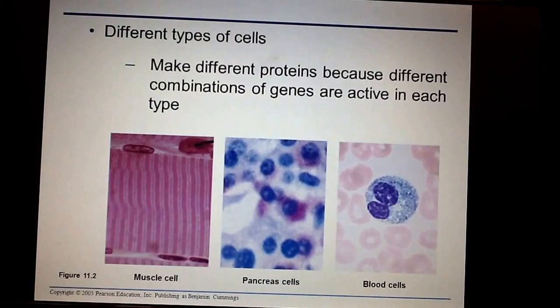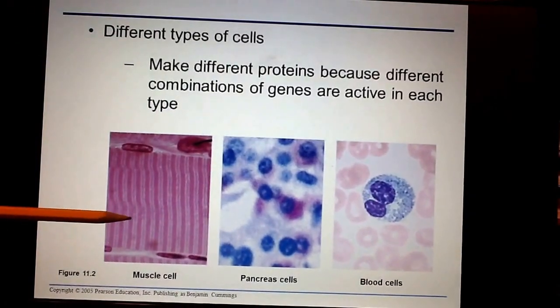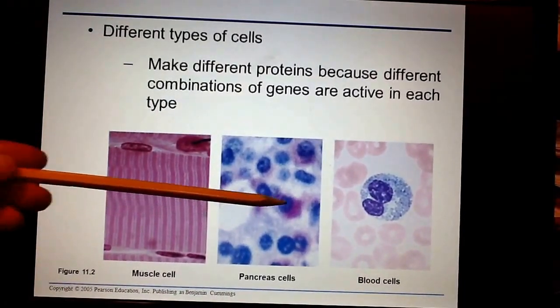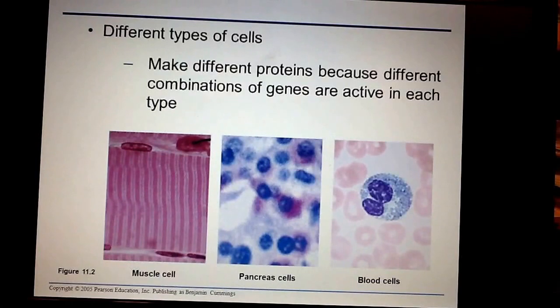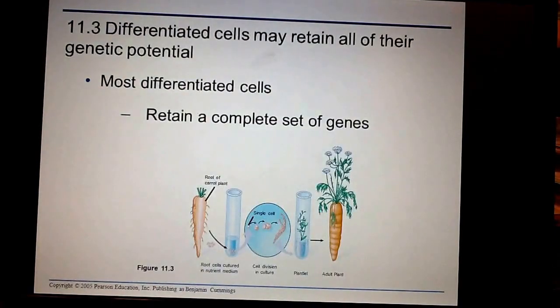For example, here's your muscle cell, which looks insanely different from a pancreatic cell, which is even different from a blood cell. Why do these cells all look different? They look different because they're making different types of genes. The thing about differentiated cells is just because you become a heart cell or a muscle cell, it doesn't mean that you've given up any of your DNA. It just means that you're not making proteins from that type of DNA. It turns out that differentiated cells retain all of their genetic potential as if they were an original stem cell.